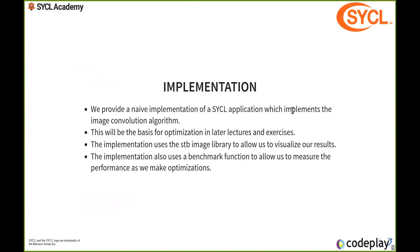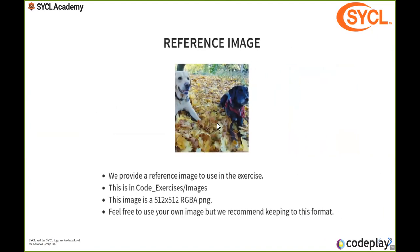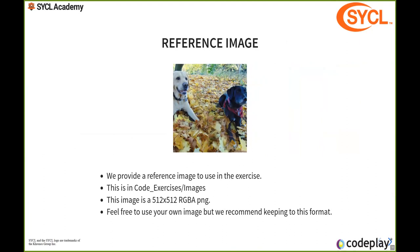We're going to use this as an application to iterate over with lots of different optimizations. The first implementation we look at is quite naive — not highly GPU-aware code — but it's easy to read and understand. We're using the STB image library to visualize our results. The implementation also uses a benchmark function, the same one used in the reduction section, which lets us measure performance by running it say a hundred or two hundred times. There's a reference image of dogs — a 512 by 512 RGBA PNG with four channels.